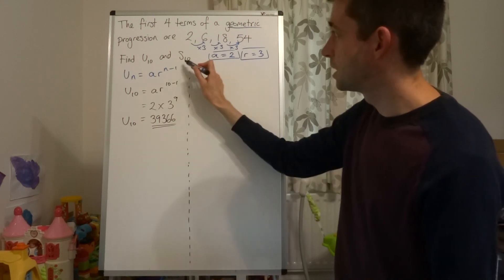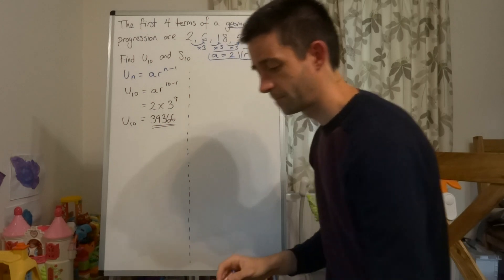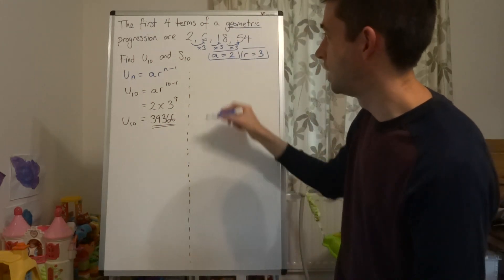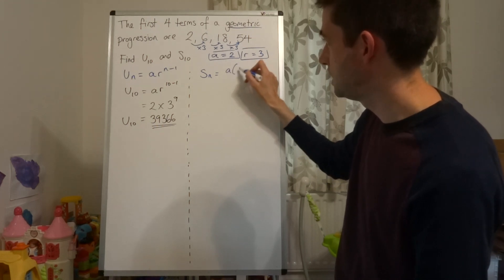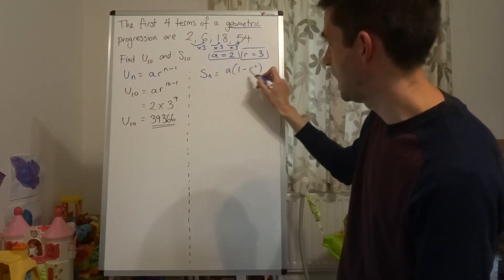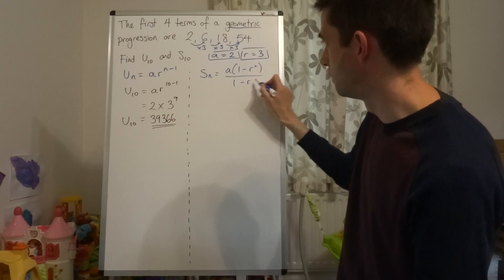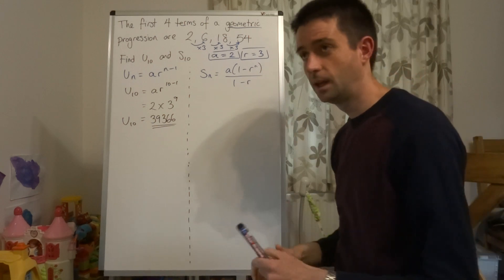Okay, the other bit - S10. That is the sum of the first ten terms. So I'm going to be using the formula we discussed in the previous video: A times 1 minus R to the N, all over 1 minus R.